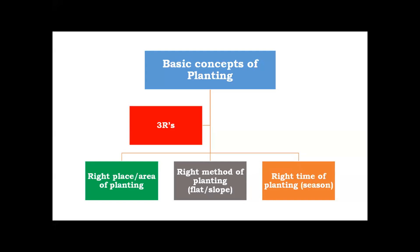The right place of the area of planting — we should give more importance to this before choosing the coffee area, because the area should have all the climatic and environmental conditions which suit the cultivation of coffee. Once the area is selected, the right method will ensure the proper and healthy establishment of the coffee plant. The degree of the planting method will vary depending upon the kind of slope or terrain.